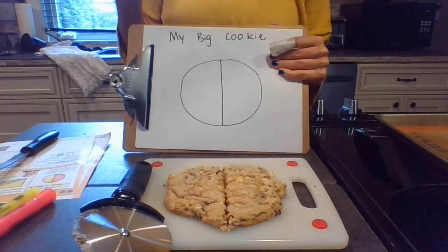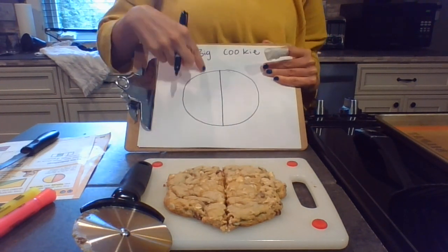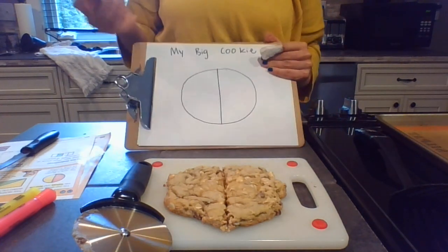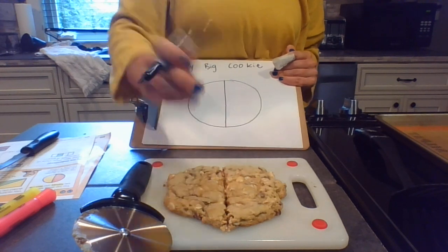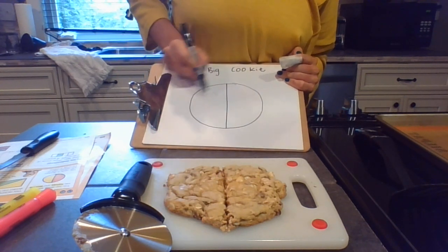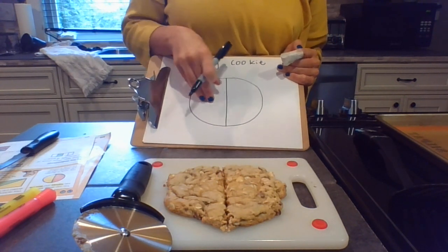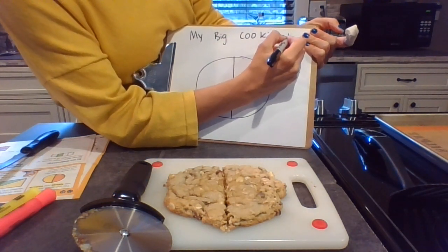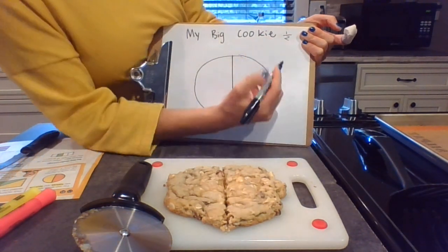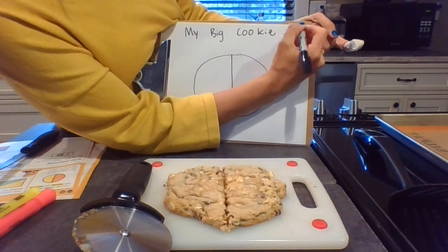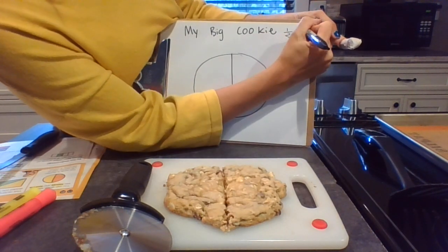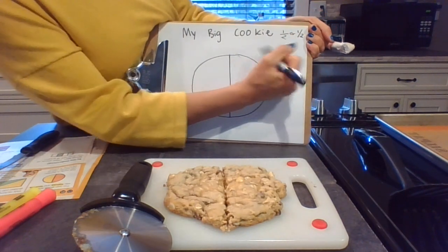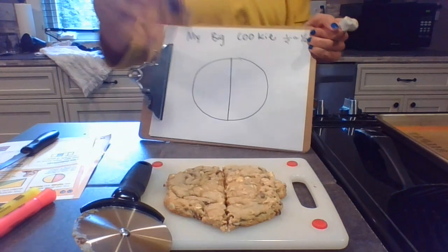So I now have two pieces of cookie. If I wanted to eat half of a cookie, I would shade in one half and it'd be one out of two pieces. That would be written like this — one out of two pieces. Sometimes people do a straight line or sometimes a diagonal line for the fraction. So this is one half right here.